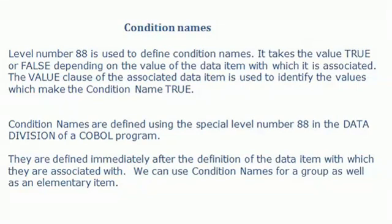In this video I am going to explain the usage of condition names and the usage of sign and class test conditions. First, let us see the usage of condition names. Level number 88 is used to define the condition names. It takes the value true or false depending on the value of the data item with which it is associated.